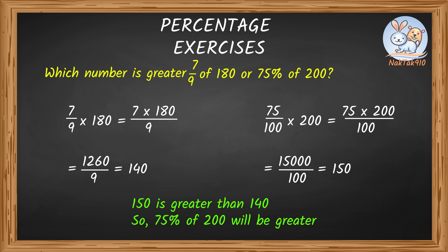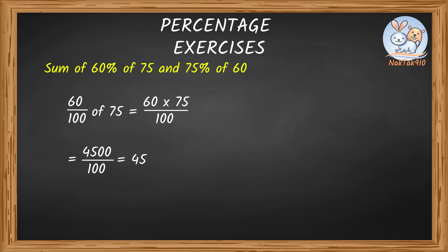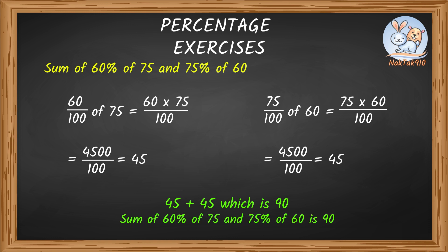Now, I've understood the concept. Can you help me do the sum of 60% of 75 and 75% of 60? Sure, Tack. Let's find 60% of 75. 60% of 75 will be 60 divided by 100 times 75, which is 4,500 divided by 100, which is nothing but 45. Now, let's find 75% of 60. Now, let's finally add 45 plus 45, which is 90. Thank you very much, NAC. I'll do more practice and remember the concept very well.